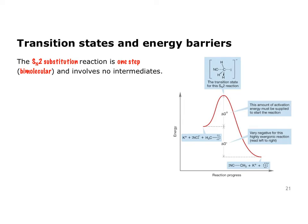Let's look more closely at the SN2 substitution, which is mechanistically the simpler of the two. In this energy diagram for the reaction of cyanide ion with methyl iodide, we see cyanide reacting with methyl iodide to produce methyl cyanide (acetonitrile) and iodide ion. Dropping the spectator ion, the overall process is simply cyanide reacting with methyl iodide to produce acetonitrile and iodide ion. It's a simple one-step mechanism.